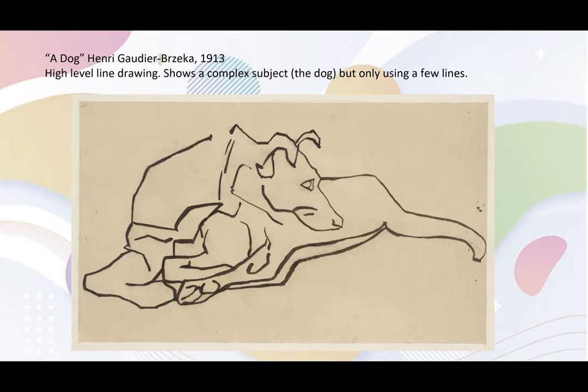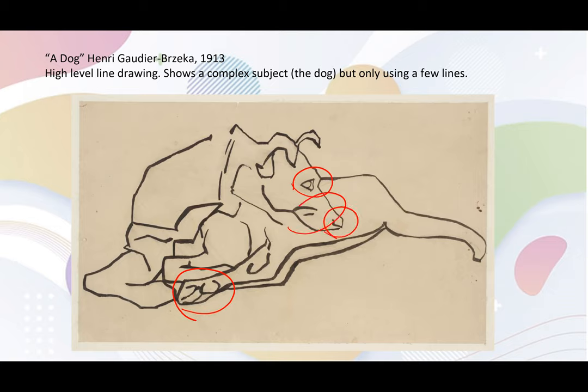I've included one more example of a line drawing by a professional artist. This drawing is a complex line drawing because even though it looks simple, it is very difficult to execute. Each line is very deliberate because the entire subject is represented by only a few lines. Also, it is important to see that the artist has included quite a lot of detail in the image, even using only a few lines. You can see this in the dog's paw, his eye, his nose, his snout, and ears.